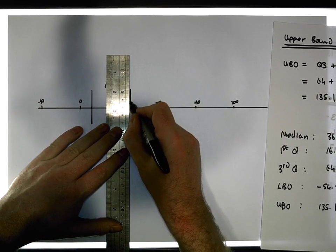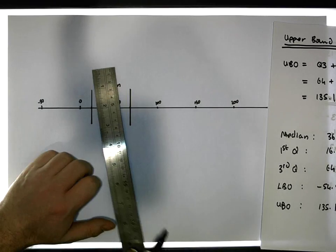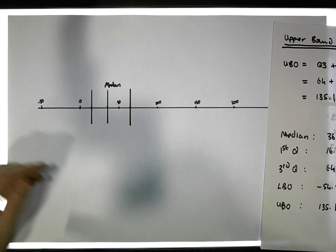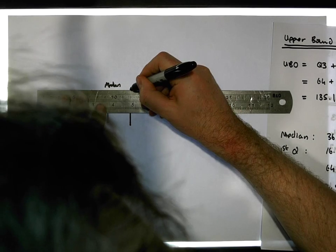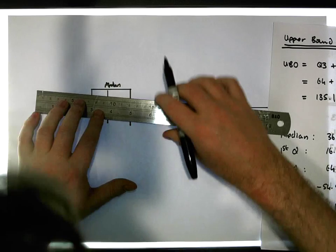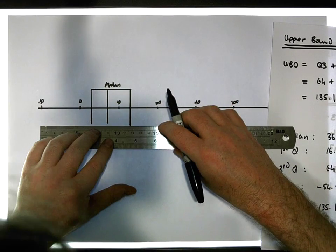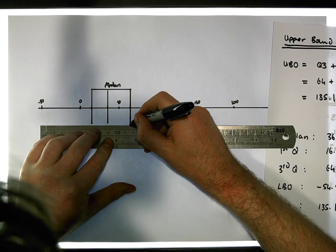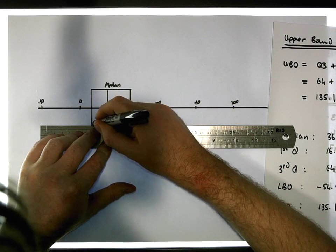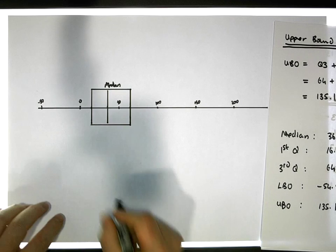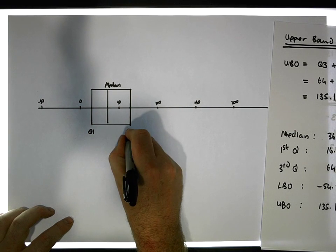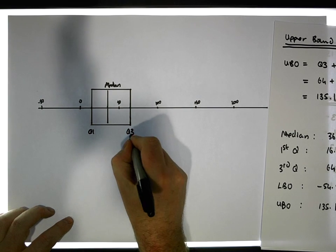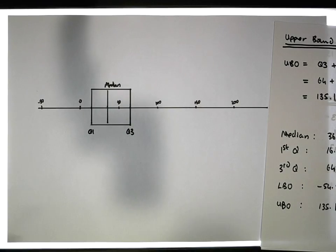Now I'm going to draw a box around these particular values. What we have is a box — this is the box part of our box and whiskers plot. Q1 is here, Q3 is here, and the center line is the median.